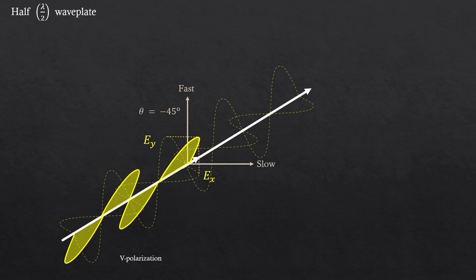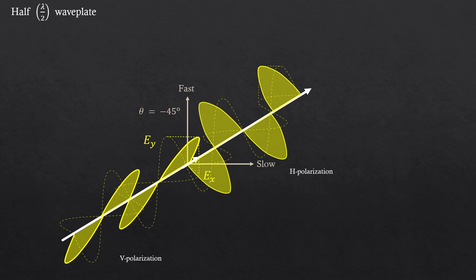And then the slow component will go a half wave slower than the fast component. I'll show it to you again. Watch. Now, look at this. The total polarization becomes like this. And what is this? Horizontal polarization.